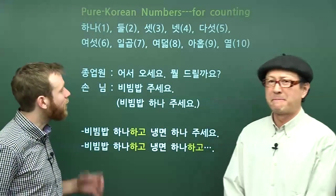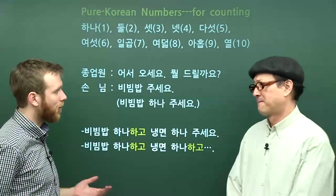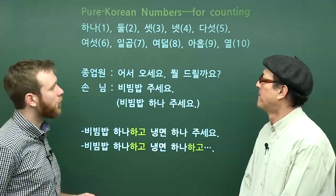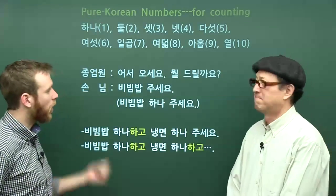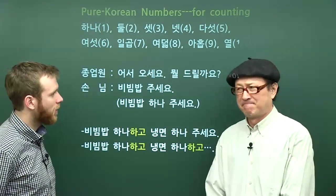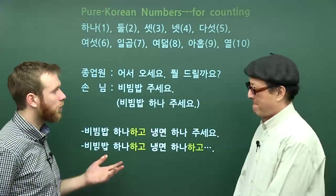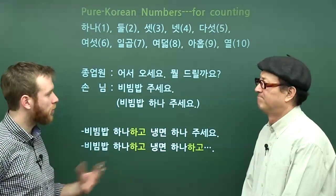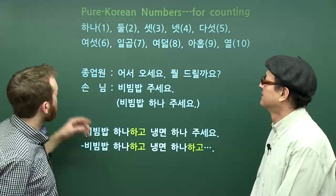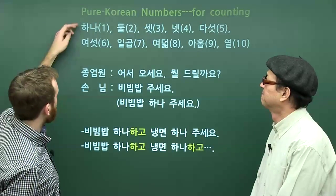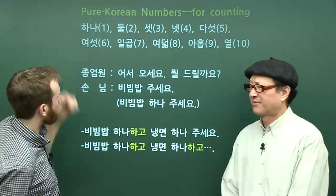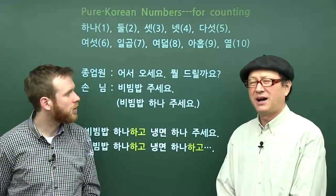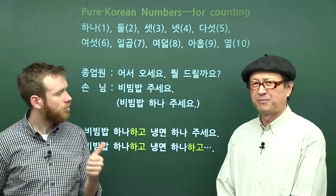There are some different systems for counting and for numbers in Korean. Right now we're going to look at the pure Korean numbers — for counting objects, maybe for ordering in a restaurant. So one of something, two of some dish. Robert, why don't you start us off. From one to ten, how do we say one to ten in pure Korean numbers? 1, 2...